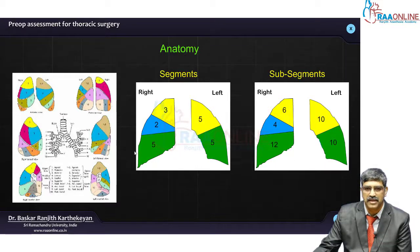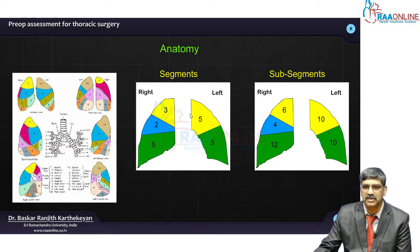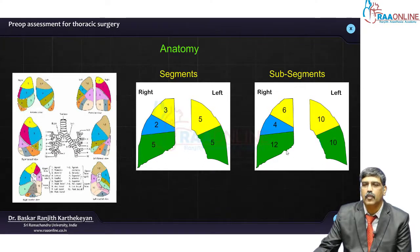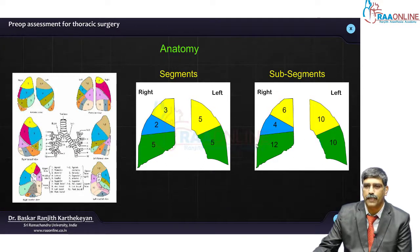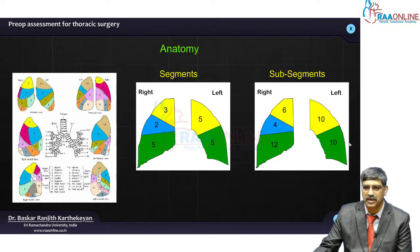Traditionally, there are 10 segments on the right side and 10 segments on the left side. Some textbooks say 9 segments on the left side. But if you take sub-segments, there are 22 sub-segments on the right side and 20 segments on the left side.